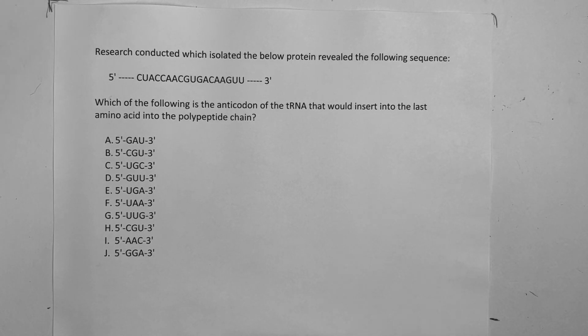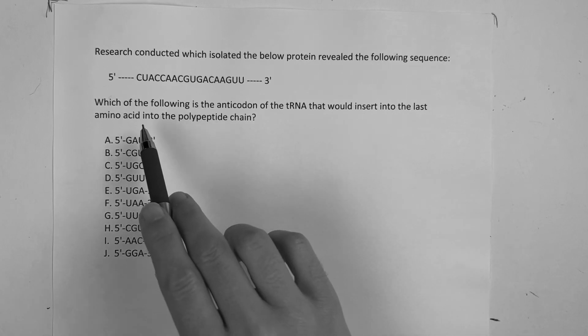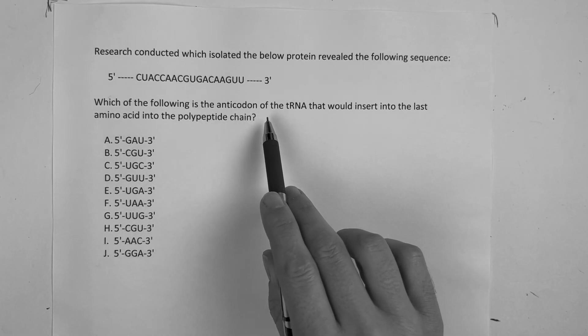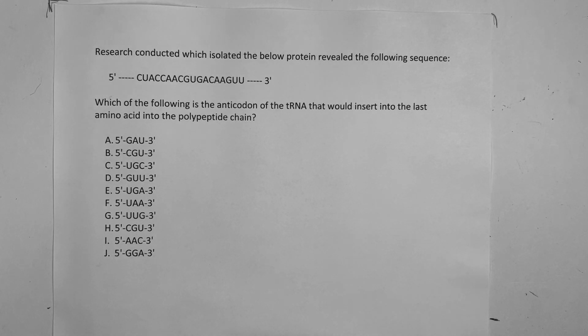Alright guys, so see if you can solve this one first before I work it out. Maybe even pause the video if you need to. It says, research conducted which isolated the below protein revealed the following sequence. Okay, and you can see 5' and then it goes down to 3'. Which of the following is the anticodon on the transfer RNA that would insert into the last amino acid into the polypeptide chain?